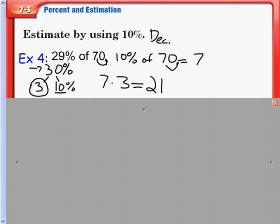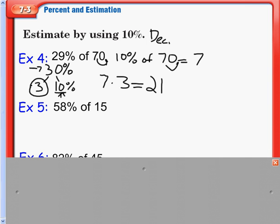As you see, we have 10% here, and we are kind of substituting our 7 in for our 10 over here. Next problem is 58% of 15. Again, we round 58% to the nearest tenth, which is going to be 60%.